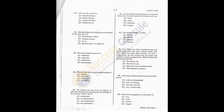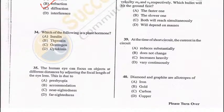Q31 = B, Q32 = C, Q33 = B. Question 34: Which of the following is a plant hormone? Cytokinin is a plant hormone — D is the answer. Question 35: The human eye can focus on objects at different distances by adjusting the focal length of the eye lens. This is due to accommodation — B is the correct answer.